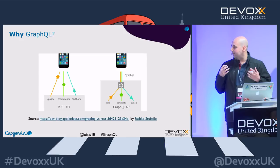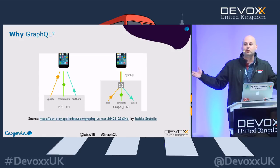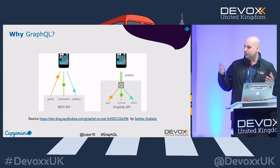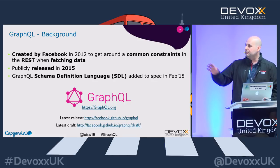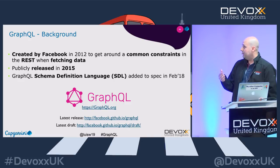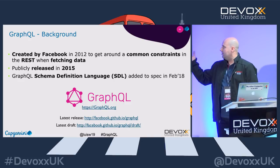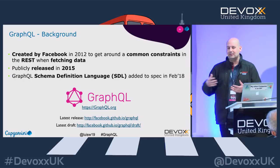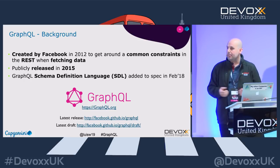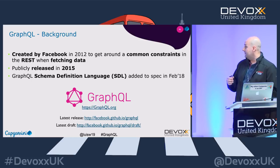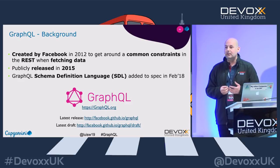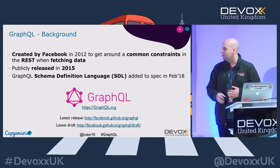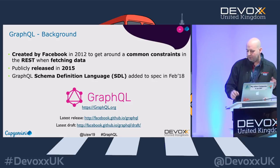GraphQL really simplifies the approach towards fetching information from multiple sources, and provides a very strong query language to do that. It was created by Facebook to get around common constraints in REST, especially when fetching data. The strength initially was around queries — just like you do SQL queries against a database, is there such a query language for web resources? As of February 2018 it also provides a very strong schema definition language, which means that when you implement a GraphQL service it is strongly typed.